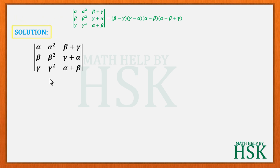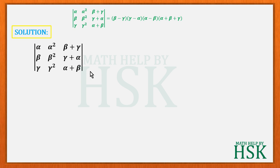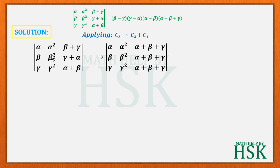To prove this, we take the left-hand side determinant. Observing column 1 and column 3, if α is the element of column 1, then β+γ is the corresponding element of column 3, and their total is α+β+γ. Similarly for the other rows. So we apply C3 → C3 + C1, making all elements of column 3 equal to α+β+γ.